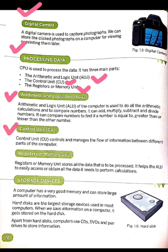Second, Control Unit. The Control Unit controls and manages the flow of information between different parts of a computer. The Memory Unit stores all the data that is to be processed, helping the ALU to easily access the data it needs to perform calculations.